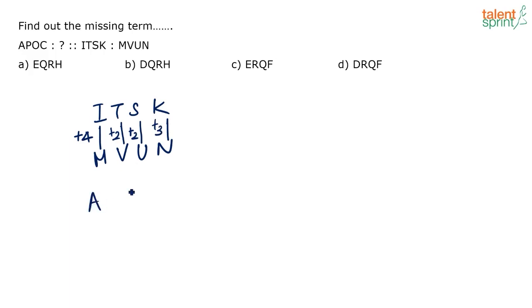Try for APOC, what you get. APOC will be A plus 4, that is after A, B, C, D, E. This is going to be E. Then after P, P plus 2, Q and R. At this point itself you know this is going to be the answer because there is no other option which has E, R. Then you have O, O plus 2 is L, M, N, O, P, Q. Similarly C plus 3, C, D, E, F. So the correct answer is ERQF.